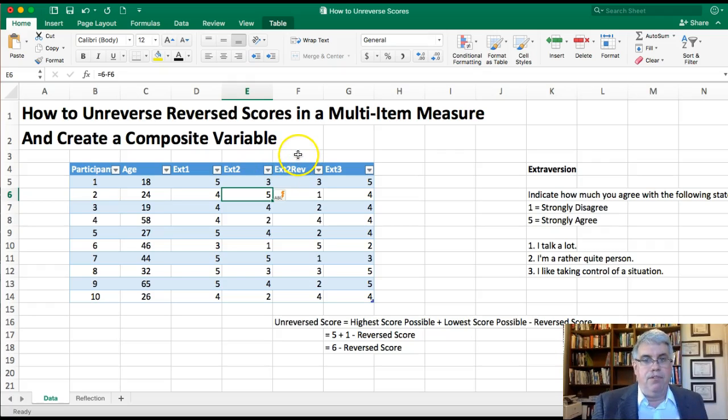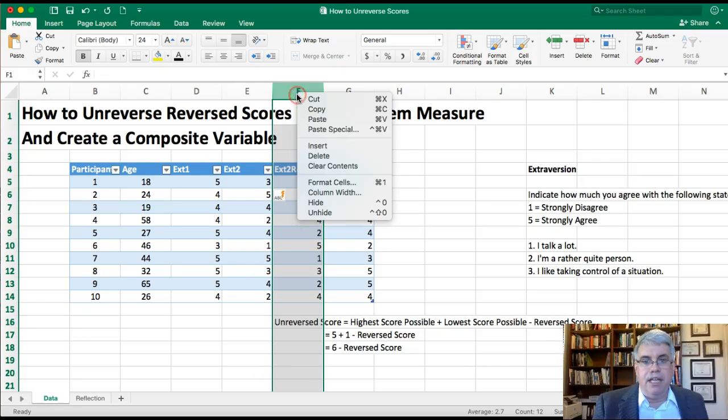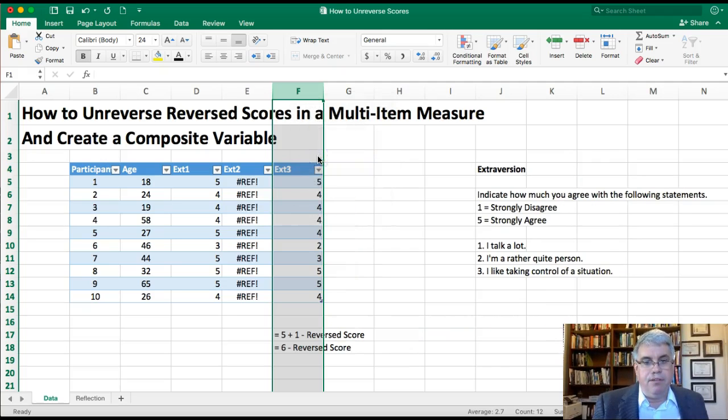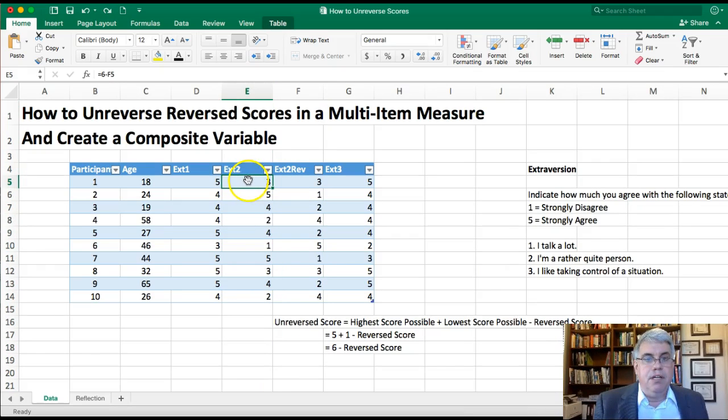Now you might say, 'well, we don't need the reverse scores anymore,' and so let's delete them. Now if I select that column and if I delete it, watch what happens. Everything messed up on our unreversed scores. Let's undo that, let's do Ctrl-Z. The reason for that is that when we look at the formula cell, for what's actually in the cell, we've got a formula equals six minus F5. So if we delete column F, everything gets messed up.